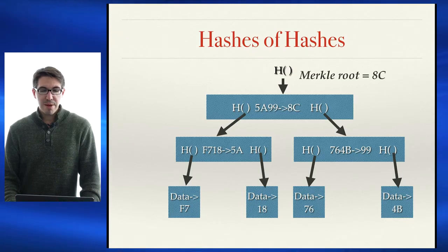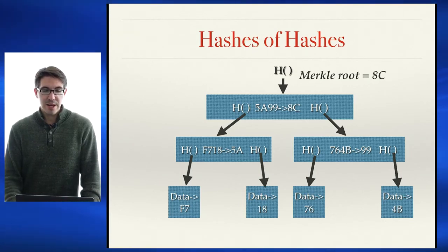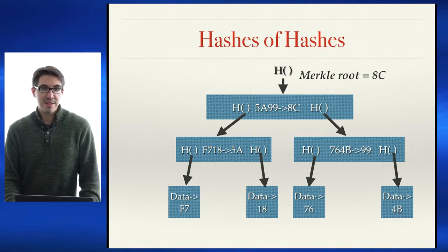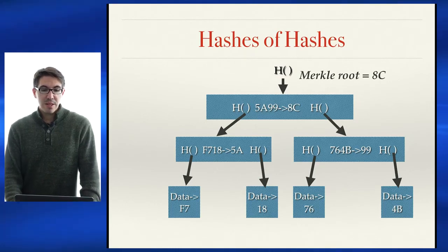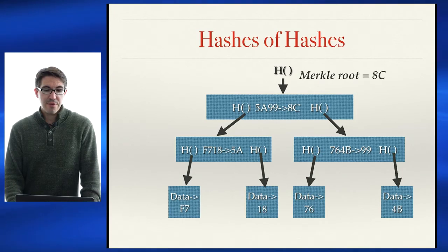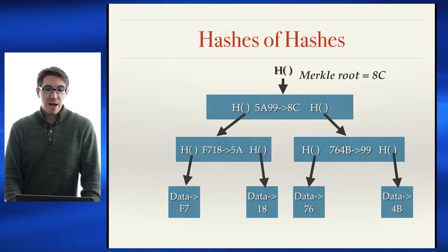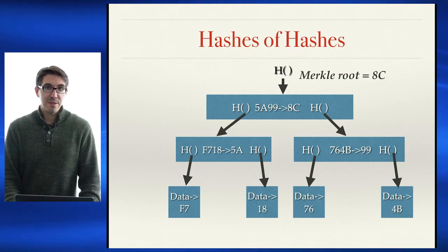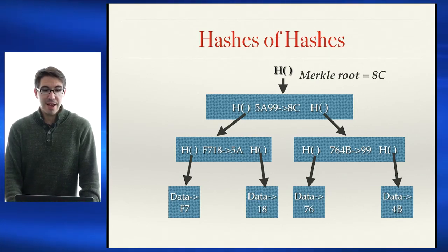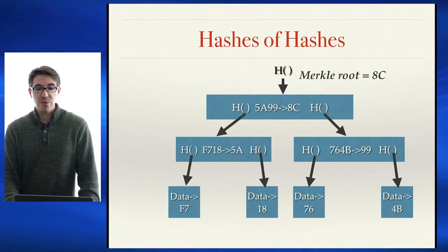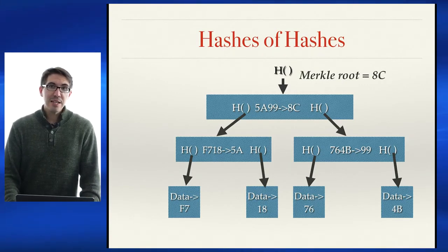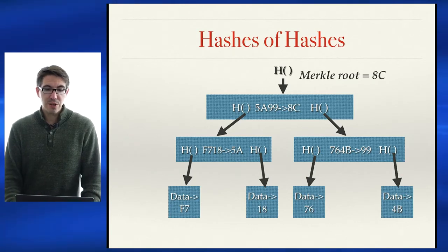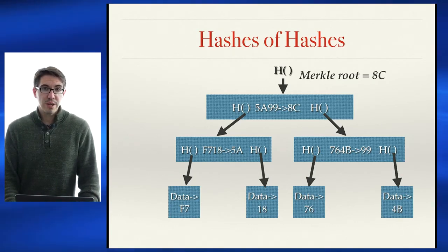I have a hash function that returns a 256-bit hash value. My data at the nodes hashes to f7, 18, 76, and 4b — all hexadecimal values. I make a tree: f7 and 18 have their hash values concatenated and hashed to get 5a. For 76 and 4b, I concatenate their hash values to get 9. I continue propagating up the tree until I get to the Merkle root, which has value 8c. Just like with a linked list, if any data has been modified anywhere in this tree, I can simply look at the Merkle root to determine whether data has been modified.